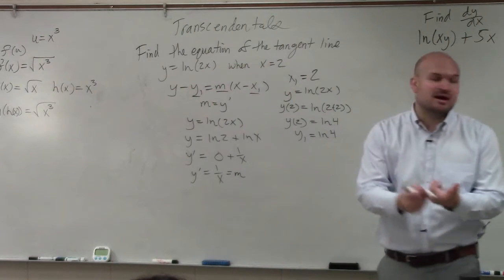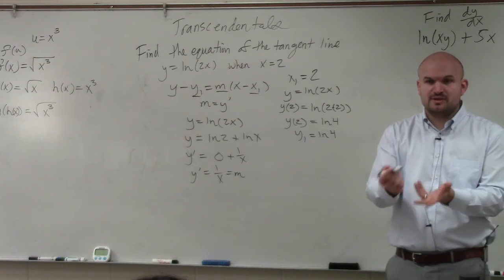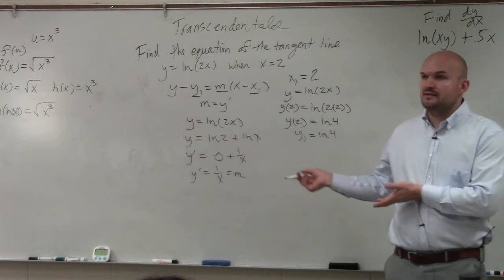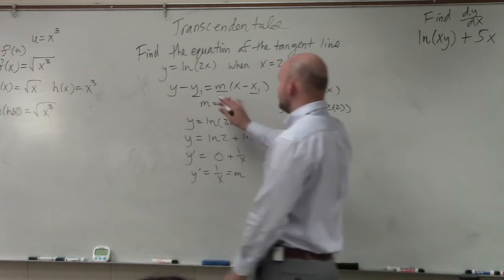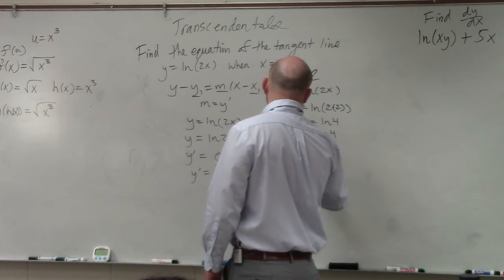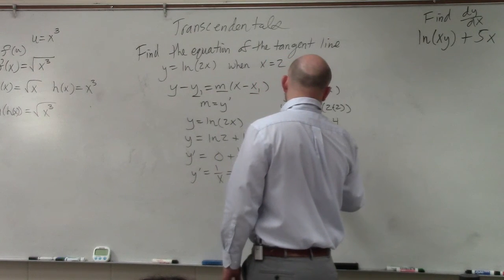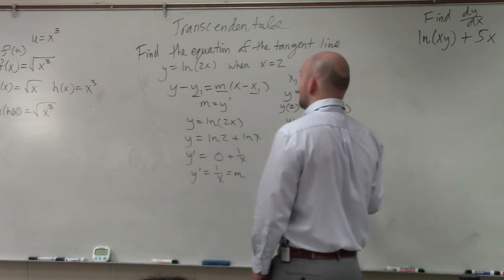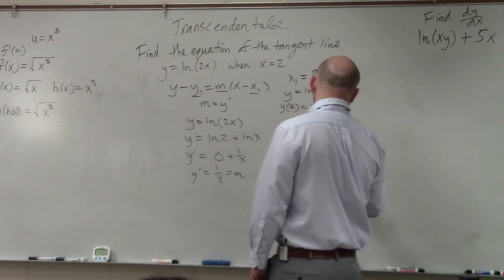So we know what y prime is. We found that we have x, we used x to find y, and now we know what y prime is. So now we just plugged it into our equation. So we have y minus y₁, which is ln of 4, equals m, which is 1 over x, times x minus my given x is 2.